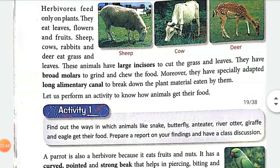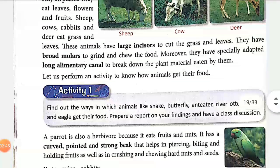Herbivore animals have large incisors. Incisors are a part of the teeth — there are four main parts. Herbivores have large incisors which help them cut and bite grass and leaves. They also have broad molars for grinding their food.